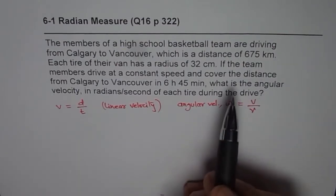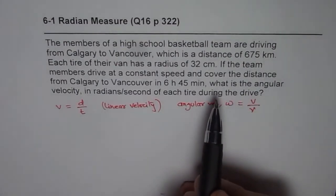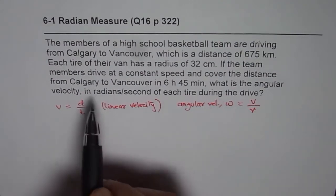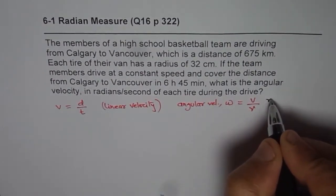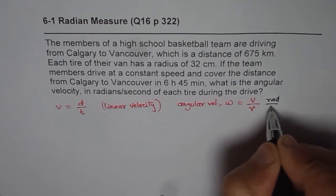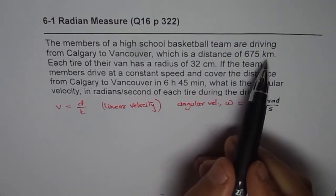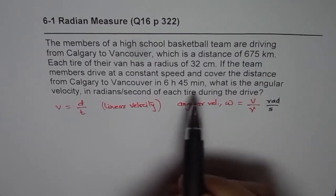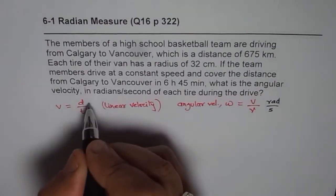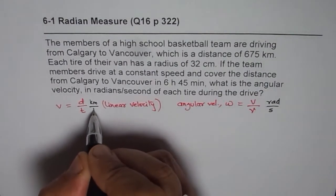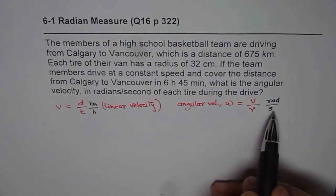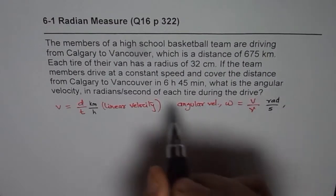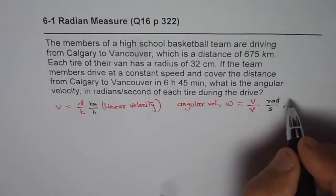Another important thing in this question is conversion of units. Angular velocity is required in radians per second. Linear velocity when you calculate it is in kilometers and time is in hours, so here we have kilometers per hour. You need to convert your units to radians per second. Also remember radius given to you is 32 centimeters.